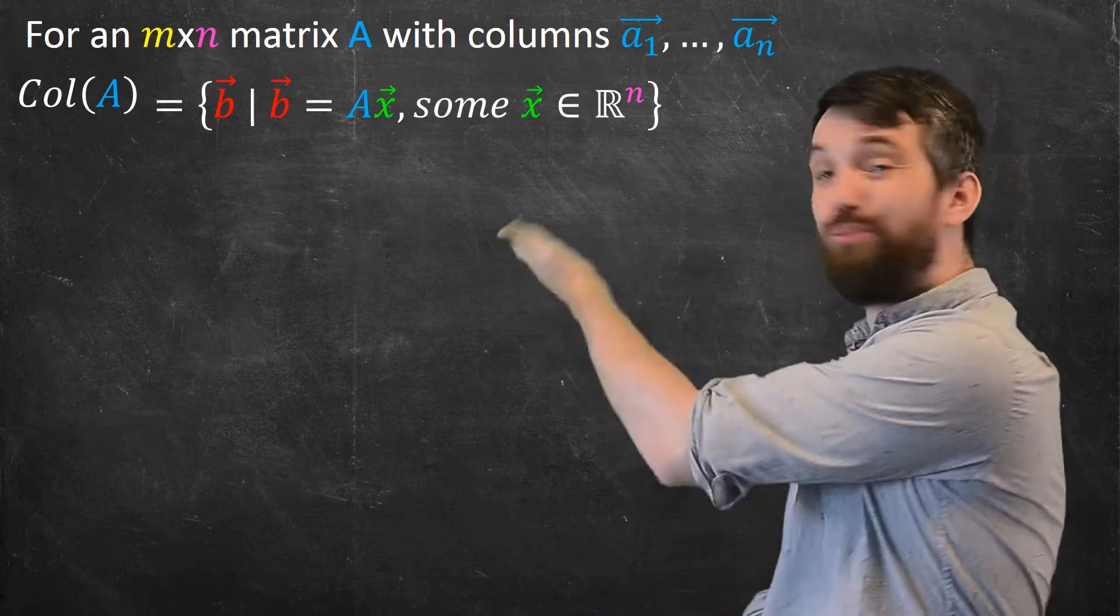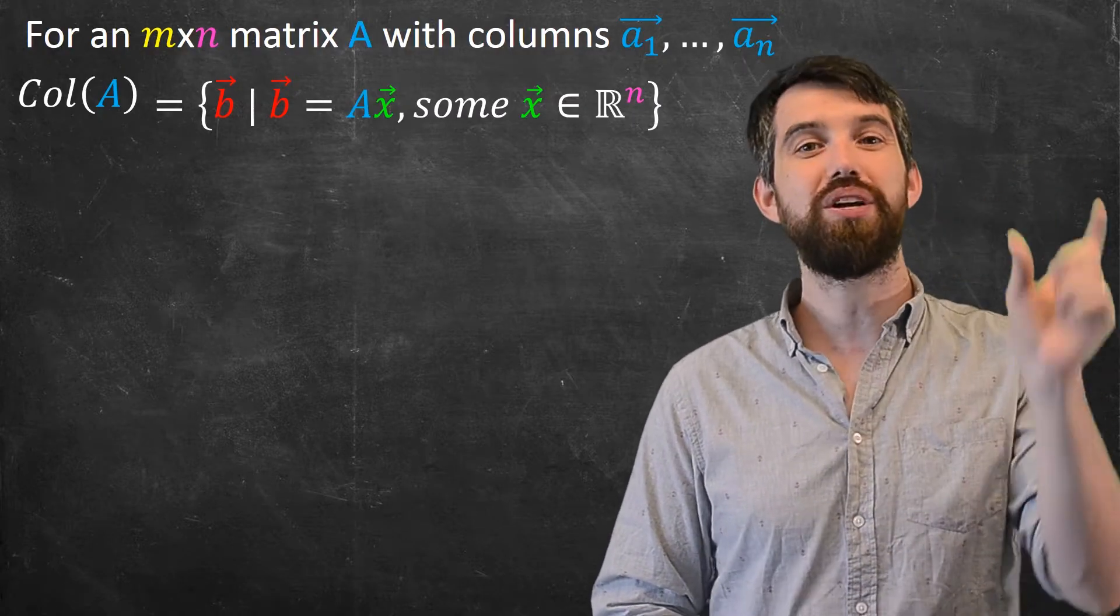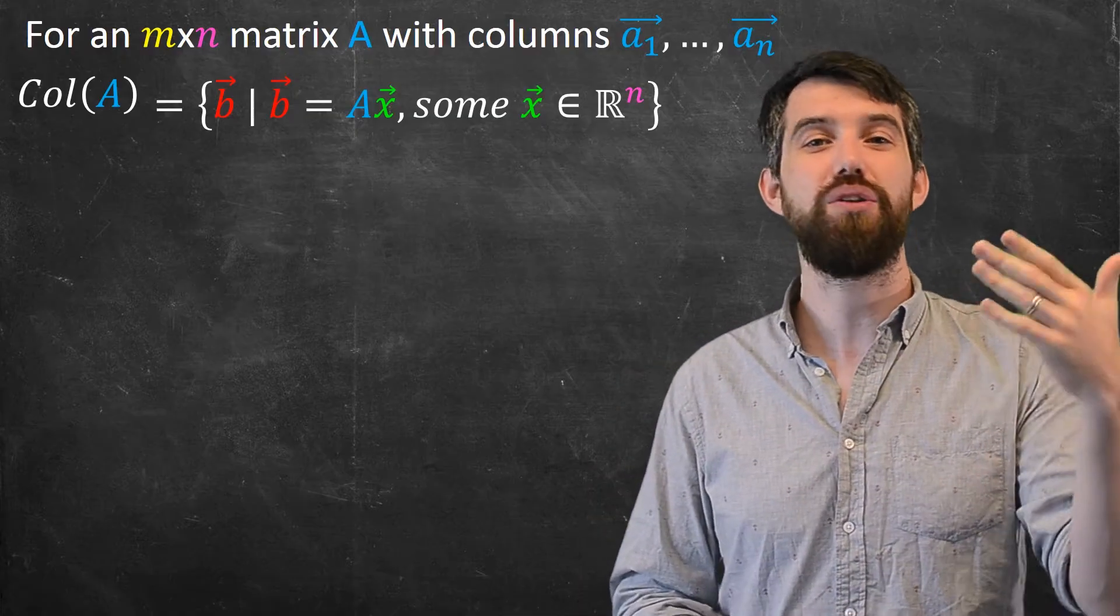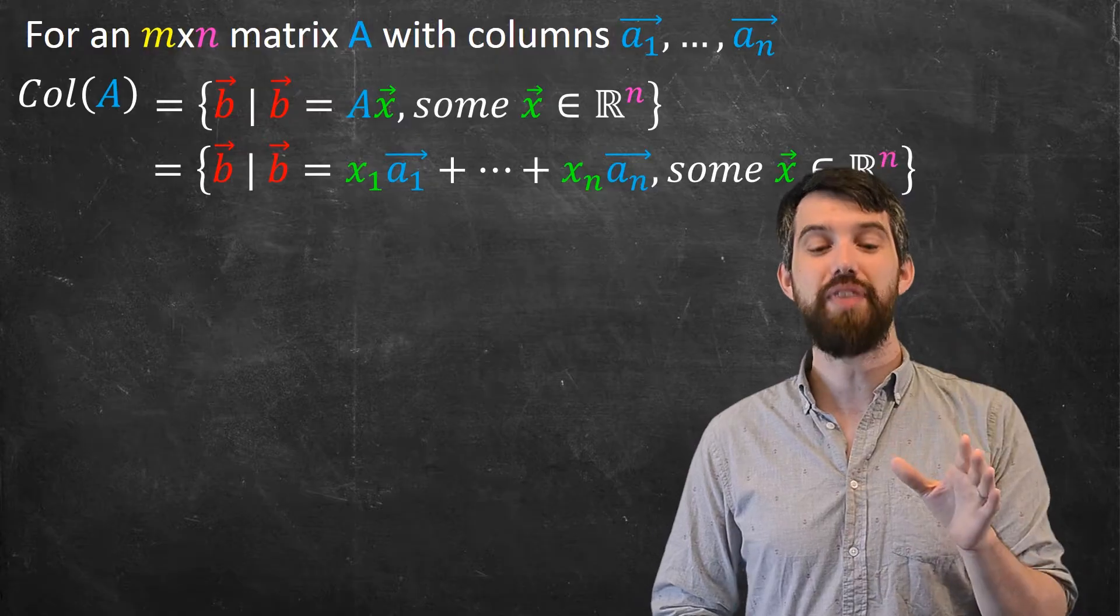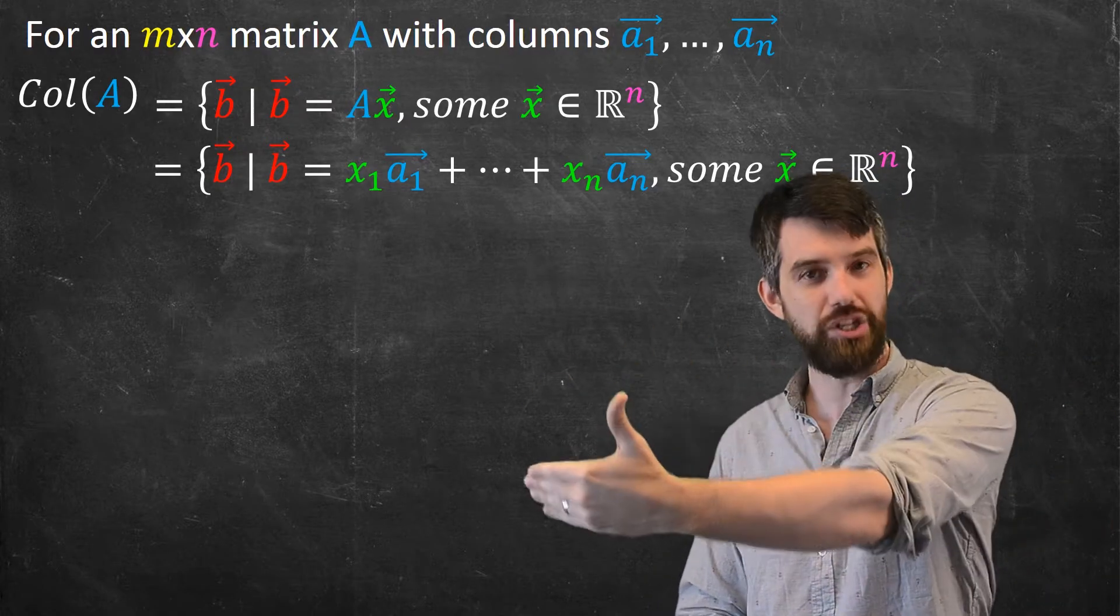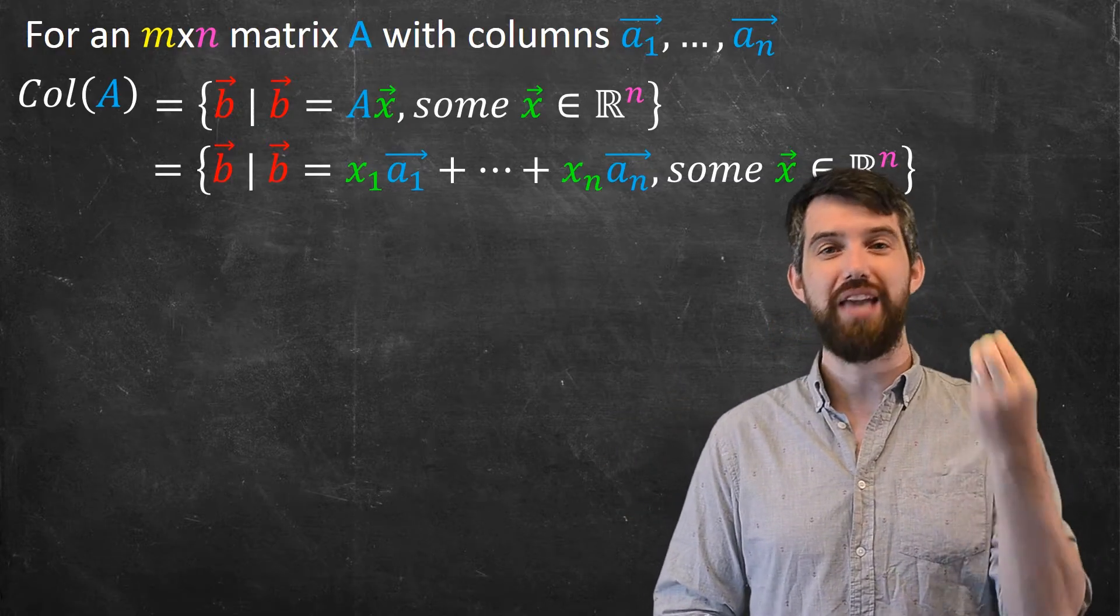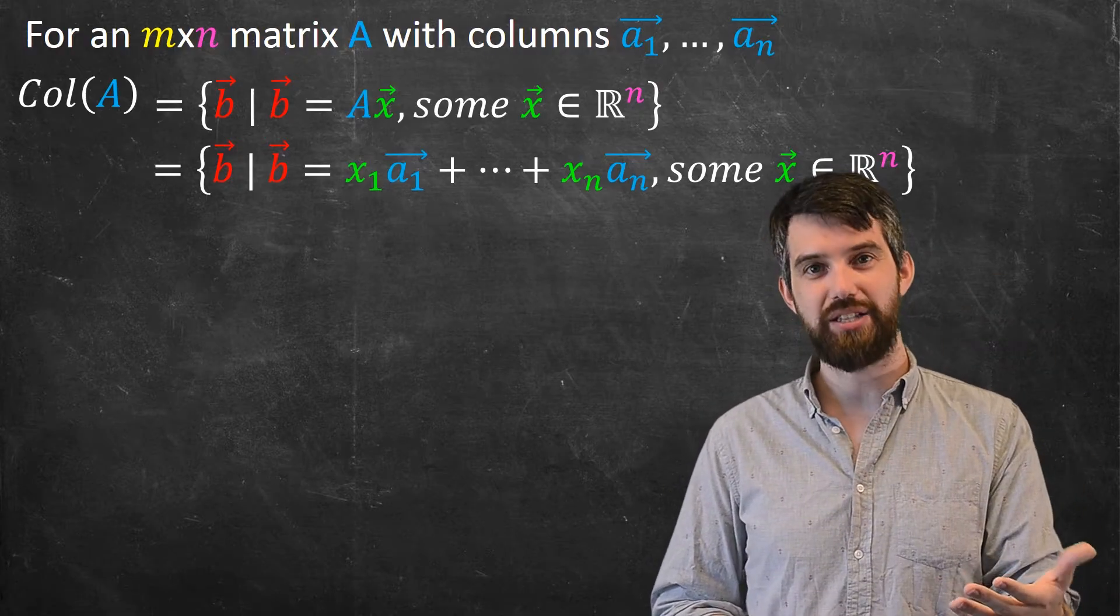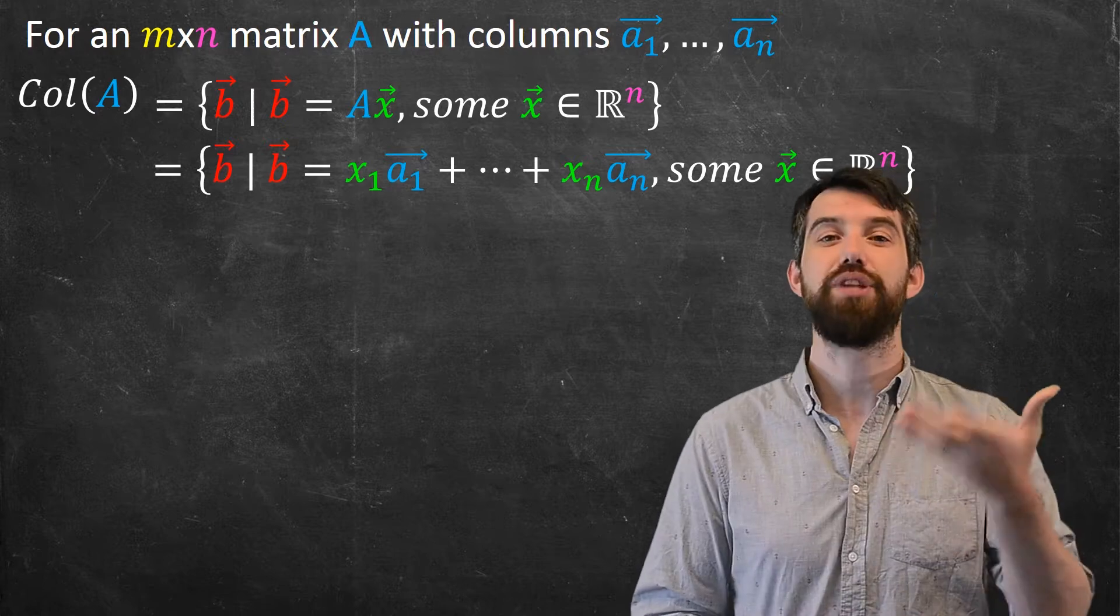Now, I can rewrite this if I like because Ax, if you recall, that's matrix vector multiplication, and it was just a shorthand for linear combinations. So if I just expand out the Ax, this is the same thing as the set of all vectors b where b is a linear combination of the columns of A—a linear combination of the a₁ down to the aₙ. And in effect we're saying that there is some value of x where the Ax is equal to b, or some linear combination of the a's that's going to equal this b.